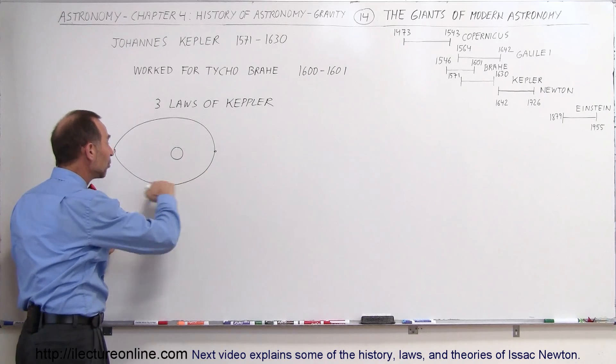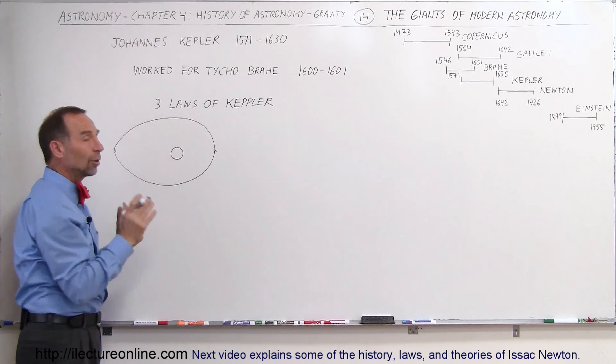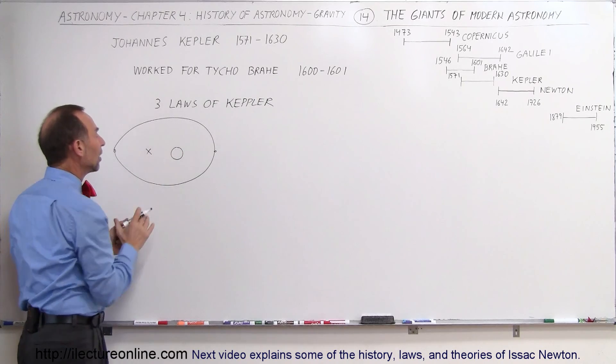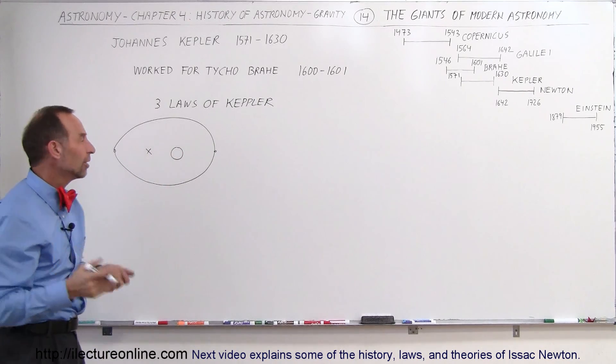It turned out that the ellipse was in such a way that the Sun was at one of the two foci of the ellipse. Here would be the other foci, there would be the Sun. And what a focus means of an ellipse.